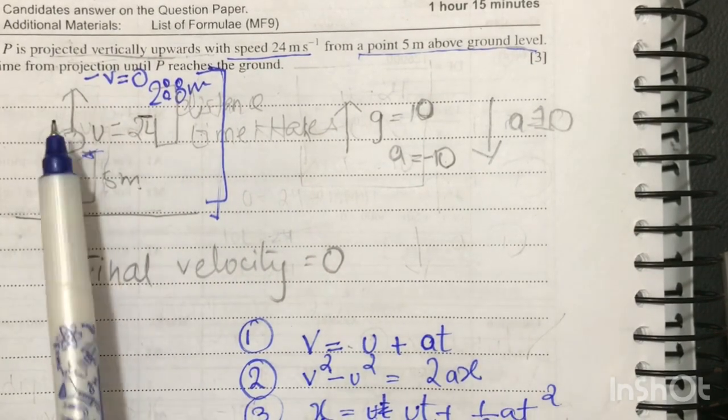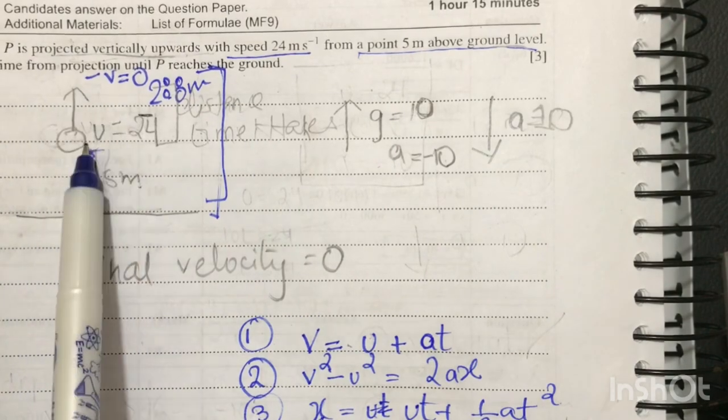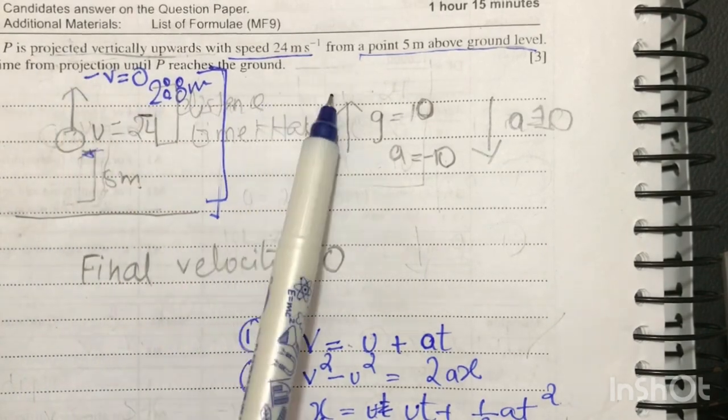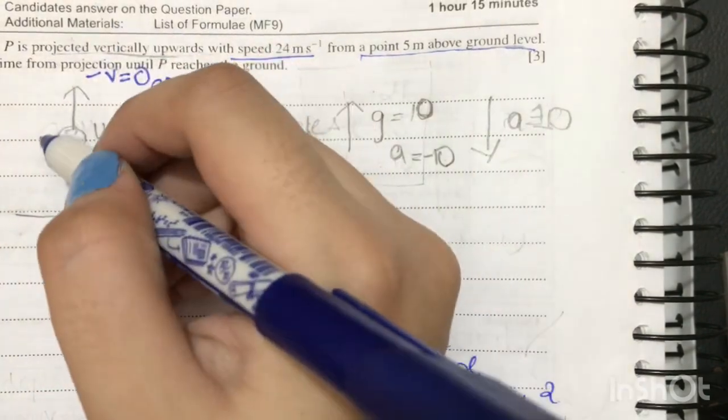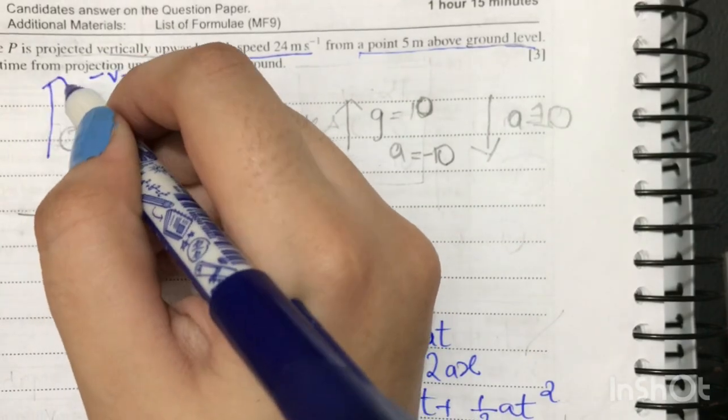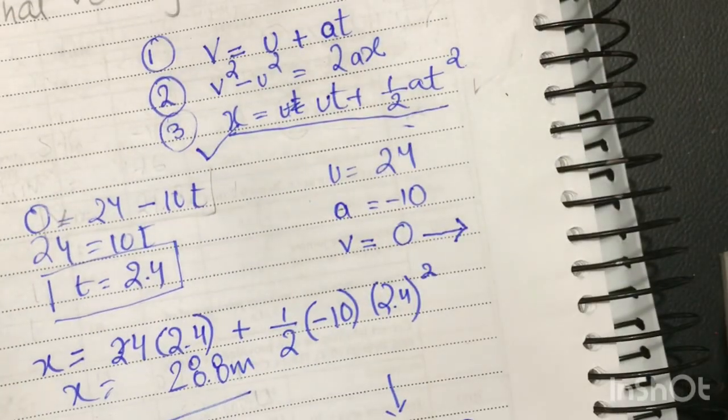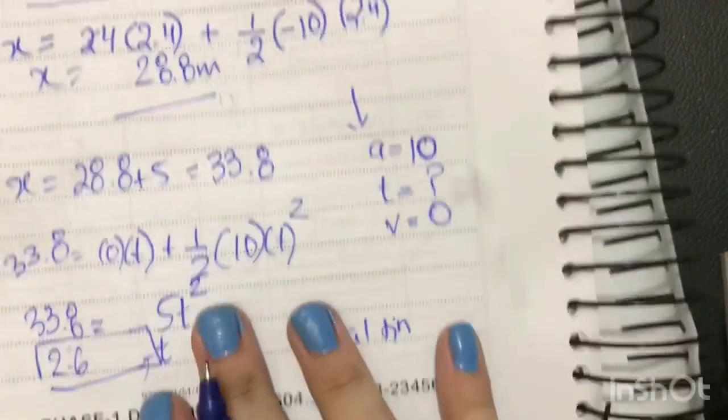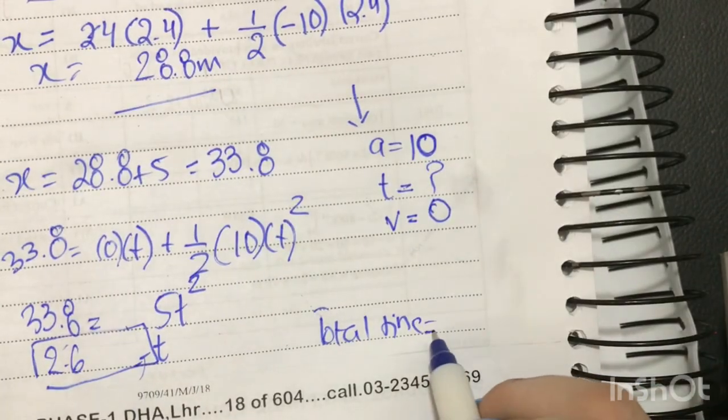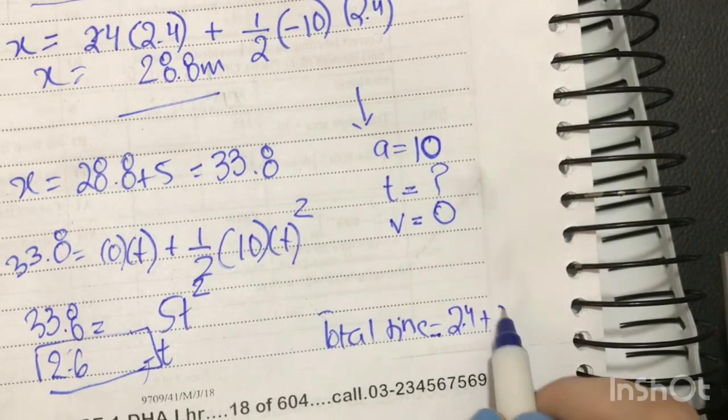But the question asks you need to find the total time from projection until P reaches the ground. So we need to find the time that it takes to move from here and then it moves back down. The total time will be 2.4 plus 2.6.